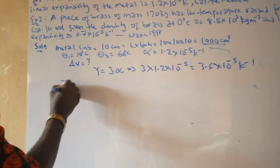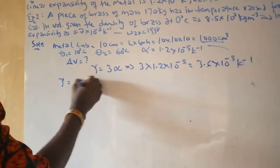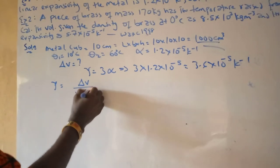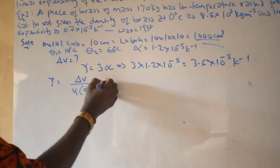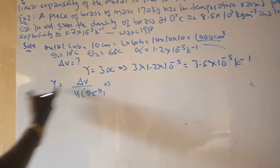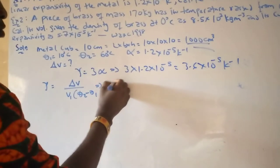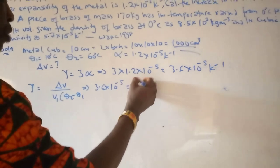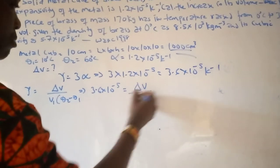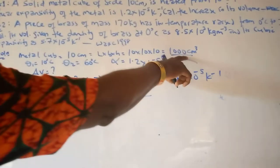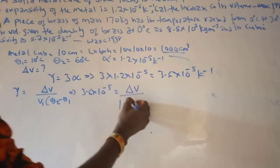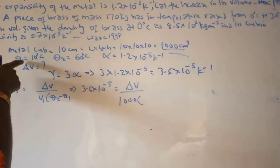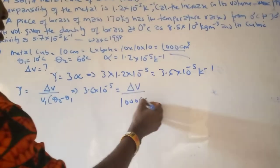From the formula, cubic expansivity (γ) equals increase in volume over initial volume times (θ₂ − θ₁). We know the cubic expansivity to be 3.6 × 10⁻⁵. We don't know the increase in volume, but we know the initial volume is 1000 cm³. The initial temperature is 10 and the final temperature is 60.